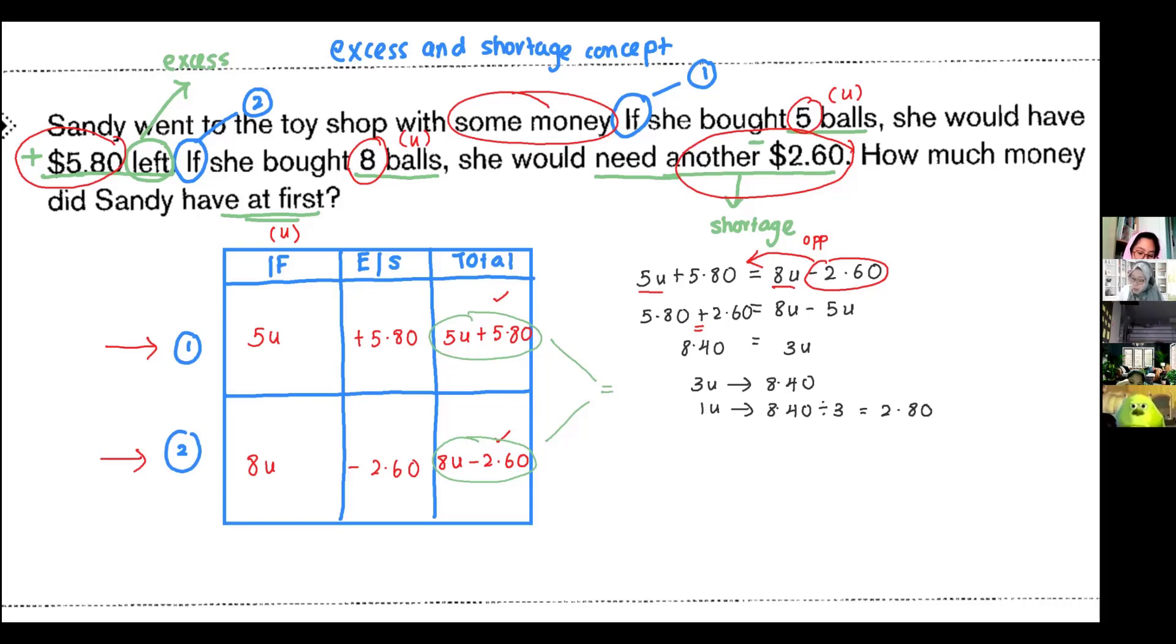Now, how much money does she have at first? So, you can either look at this one or this one. I want to use this to find my answer, because it's easier. It's just five unit plus $5.80. You sum us minus. I use the plus instead of minus.